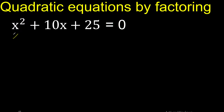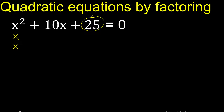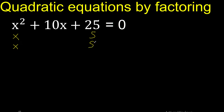x multiplied by x is x squared. We need 2 numbers that multiply to 25. 25 multiplied by 1 is 25, or 5 multiplied by 5 is 25. Let's try with 5.